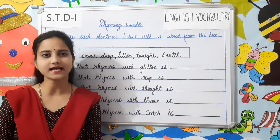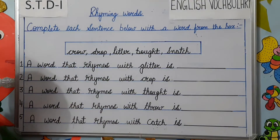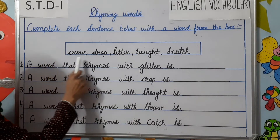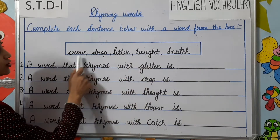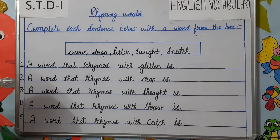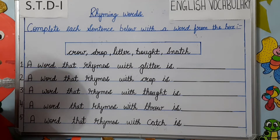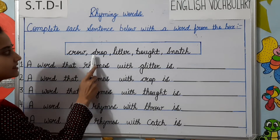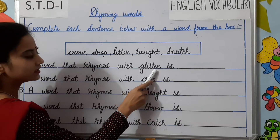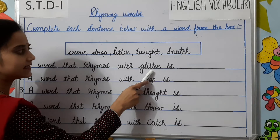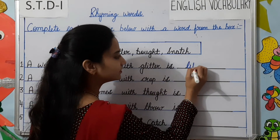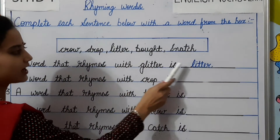Now let us do some exercises based on rhyming words. Complete each sentence below with a word from the box. You have to choose the correct word from the box and complete the sentence. Number 1: a word that rhymes with glitter. You need to find out the word rhyming with glitter — same ending sound. Glitter rhymes with litter.